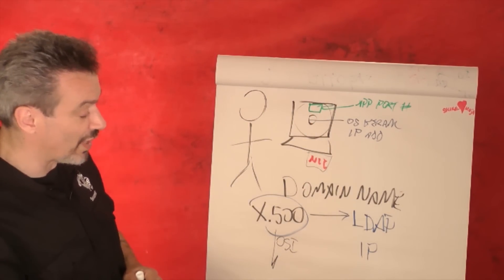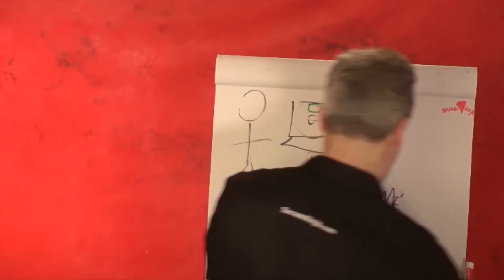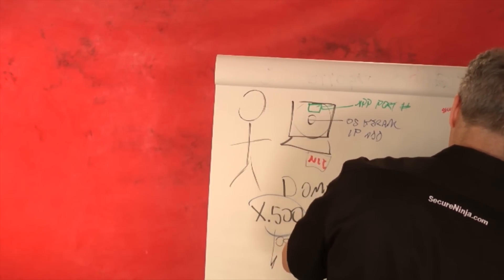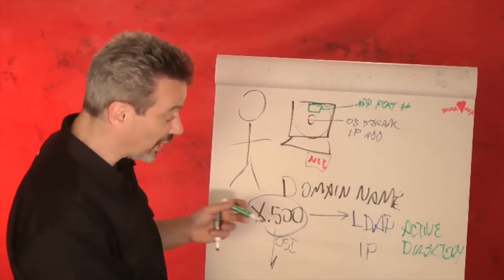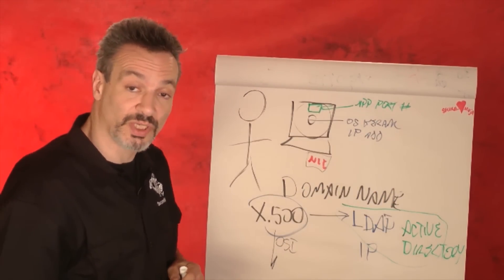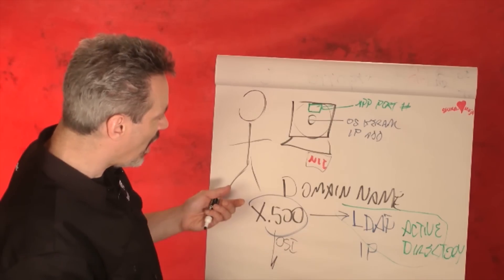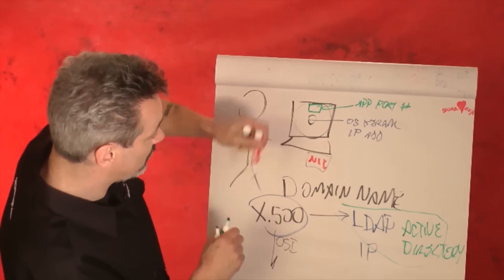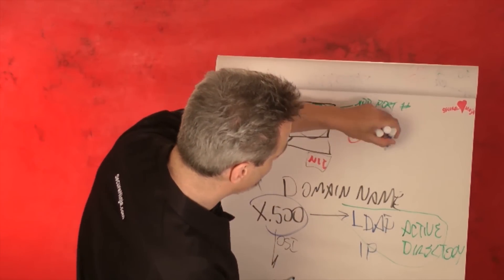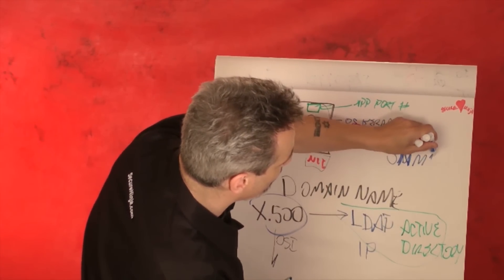Novell actually came with a version of that — there was NDS — and Microsoft has an implementation of that known as Active Directory. So we could get a list of all the resources if we could enumerate the LDAP or Active Directory database. There are a couple of tools you'll see in your module you can play with — I just want you to get the concepts here. Anything that loads IP has a maintenance protocol that could be enabled by default in many cases: the Simple Network Management Protocol, SNMP.